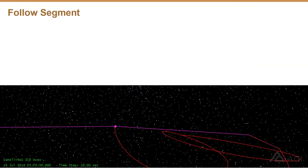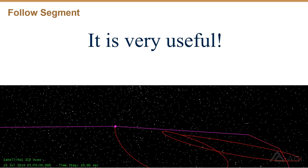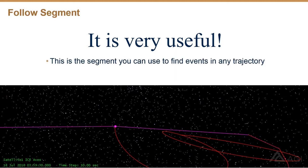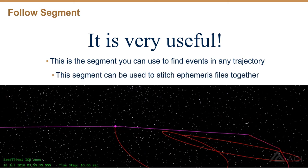We're going to start by talking about the follow segment, because it is amazingly useful. When I was making the Segment Propagation Library, I asked around what features were most important, and I was surprised at how passionately several people said they need the follow segment. It's the segment you can use to find events in a trajectory, and it's also the one you can use to stitch ephemeris files together — you just follow one .e file, then follow another with a second segment, export the combined ephemeris, and they're stitched together with all reference frames taken care of.